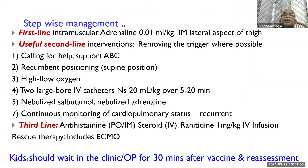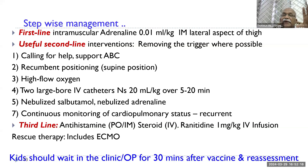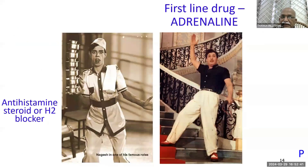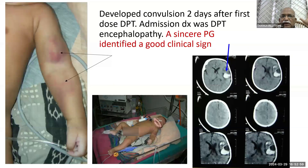After adrenaline, the other interventions follow: lay the child down, call for help, correct positioning, high-flow oxygen. Start two IV lines, because within a few minutes the child may develop shock and IV access may become impossible. Give salbutamol nebulization and nebulized adrenaline with continuous monitoring. Antihistamine is only third-line management — not first. We are all taught to give antihistamine and dexamethasone or hydrocortisone for any allergy, but that is third-line only. Last rescue therapy is available if everything fails. Also remind everyone: after receiving a vaccine, the child should wait in the clinic or OPD for 30 minutes, because if serious anaphylaxis develops, there is a window of opportunity to manage it successfully. Adrenaline is the hero — the oldest, cheapest, and best drug. Without adrenaline, even an ICU cannot function. Adrenaline IM in the lateral aspect of the thigh is the best drug for anaphylaxis.